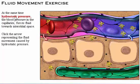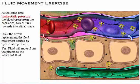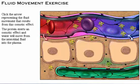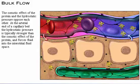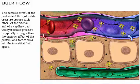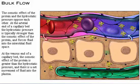Fluid will move from the plasma to the interstitial fluid due to hydrostatic pressure. The osmotic effect of the protein and the hydrostatic pressure oppose each other. At the arterial end of a capillary bed, the hydrostatic pressure is typically stronger than the osmotic effect of the protein and forces fluid, along with nutrients, into the interstitial fluid space. At the venous end of a capillary bed, the osmotic effect of the protein is greater than the hydrostatic pressure, and there is a net movement of fluid containing carbon dioxide and wastes into the plasma.